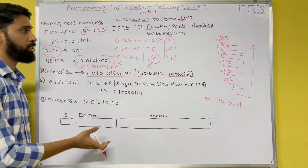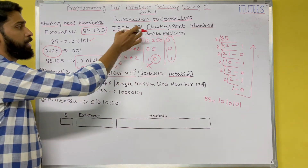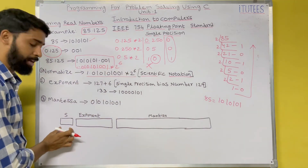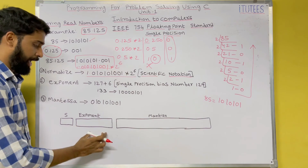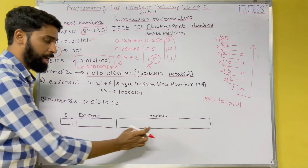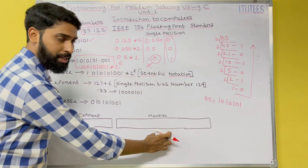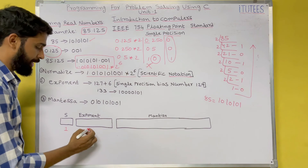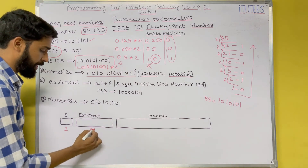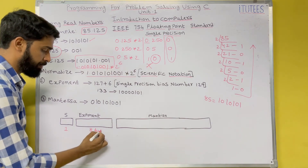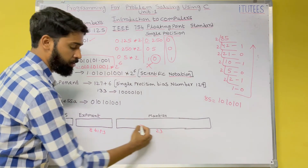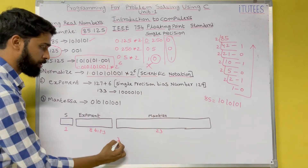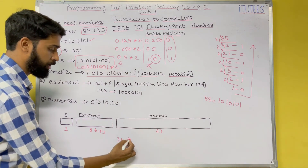Now, what is the structure of the IEEE 754 floating point standard? It consists of a sign bit (1 bit), an exponent field (8 bits), and a mantissa field (23 bits), for a total of 32 bits in single precision.